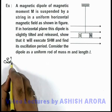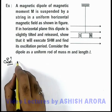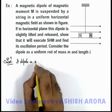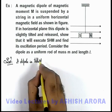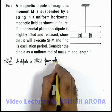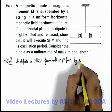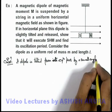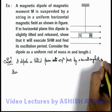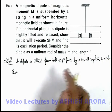In this situation, if the dipole is tilted from its equilibrium position by a small angle theta in the horizontal plane, we are twisting it in the horizontal plane.